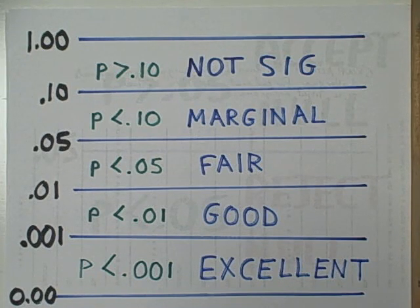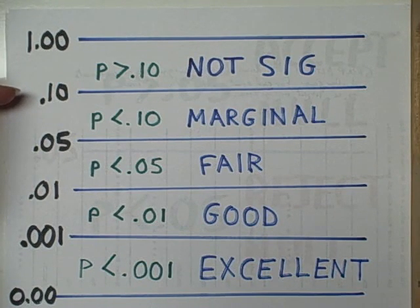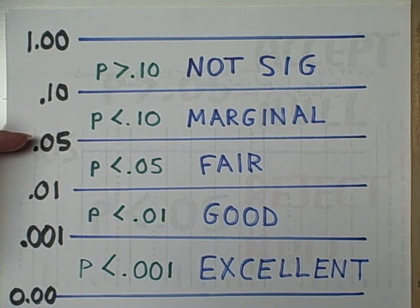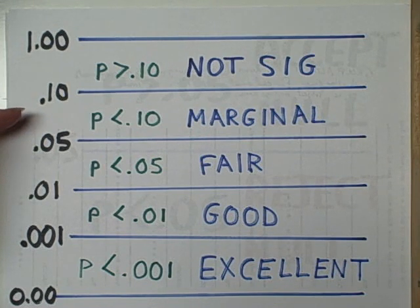If the probability of the null hypothesis is greater than one chance in 10, 0.1, we will say the data are not significant. If we are less than 0.1, but still greater than 0.05, we are getting close, but we are still only in a kind of a marginal range.